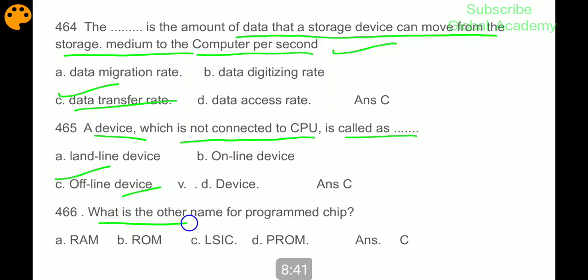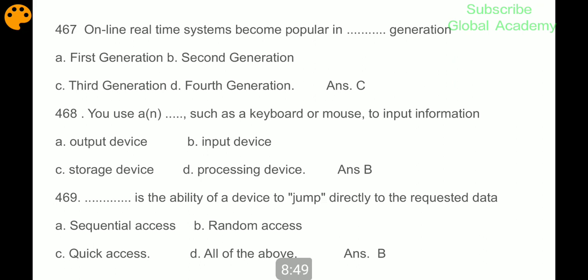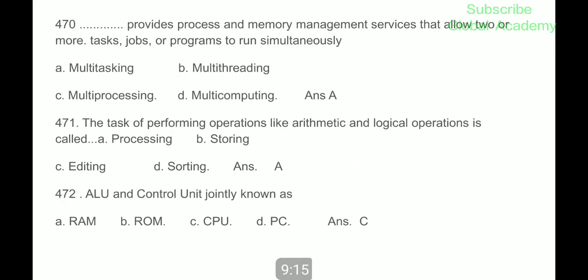What is the other name of program chip? LSI. Online real-time systems became popular in third generation. You use devices such as keyboard or mouse to input information. You use input device. Random access is the ability of device to jump directly to the requested data.